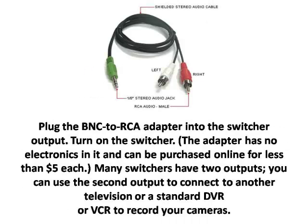Step 2: Plug the BNC to RCA adapter into the switcher output, then turn on the switcher. The adapter has no electronics in it and can be purchased online for less than $5 each. Many switchers have two outputs — you can use the second output to connect to another television or a standard DVR or VCR to record your cameras.